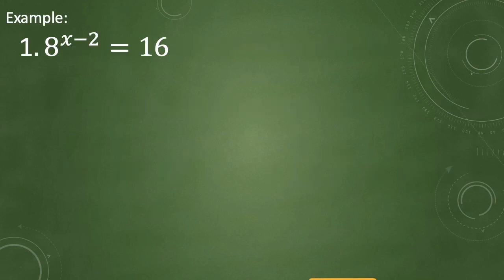On our example number 1, we have 8 raised to x minus 2 equals 16. Our goal is to make the bases the same. We will look for factors from which each exponential expression results in the original number. We will be using 2 as our common base.